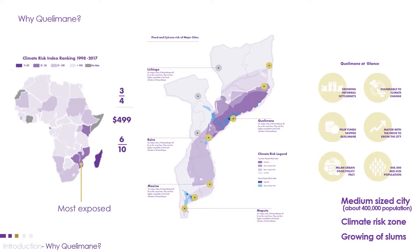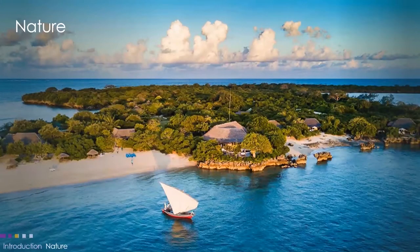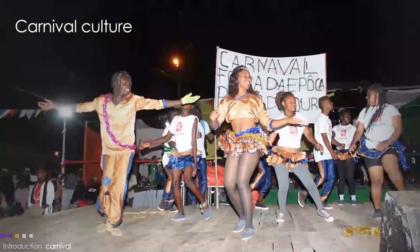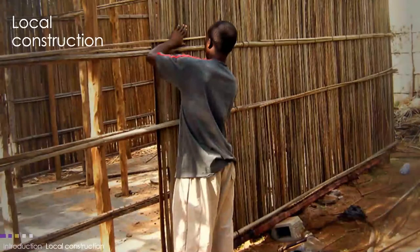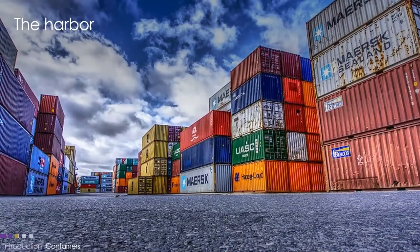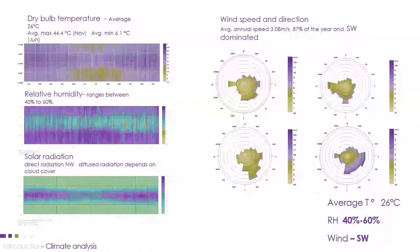At a glance, informal settlements in Kilimani are increasing and different funders have skipped Kilimani. It is a medium-sized city with about 400,000 inhabitants. Kilimani has many street sites and buildings, as well as natural resources such as water landscapes. Cycling is a culture in Kilimani, and carnivals and events are frequent activities, making it a vibrant city. However, slums are a problem, with local construction using wood, bamboo, and palm trees with traditional knowledge.